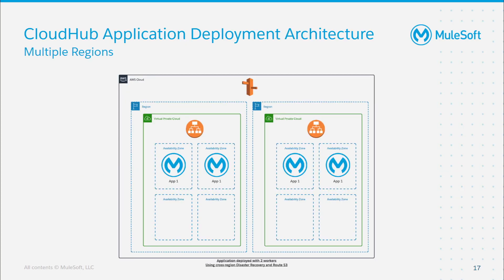In the case where customers wish to deploy applications across multiple regions, a typical deployment might look something like this. As you can see, a customer has two separate VPCs deployed in different regions, which enables applications to be deployed across multiple AWS regions and subsequently across multiple availability zones if multiple workers are deployed. In order to balance traffic between multiple regions, a global load balancer is required. In this diagram, we show AWS's Route 53 global load balancer, though you can utilize any kind of global load balancer, such as an F5, or whatever you have within your organization.